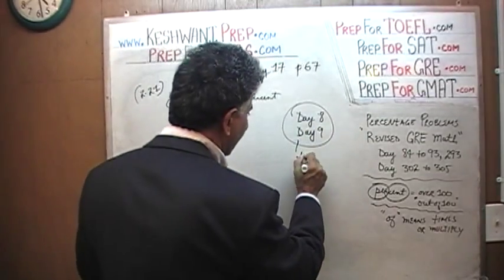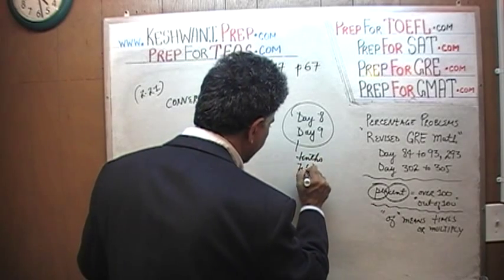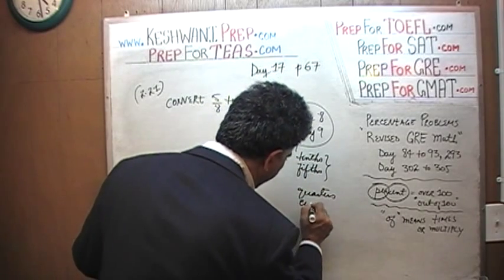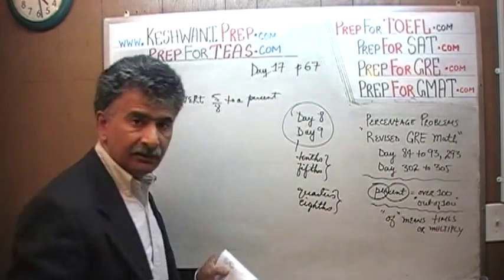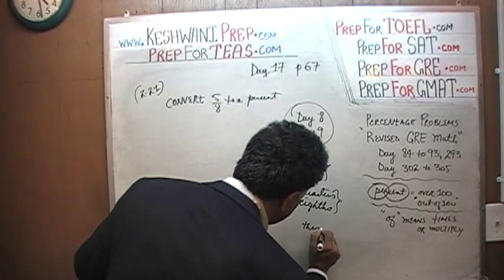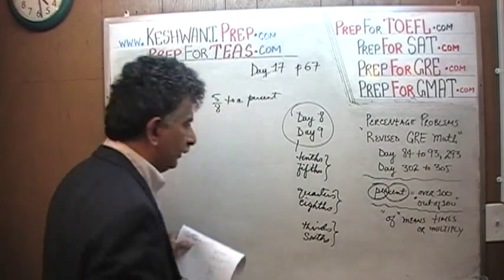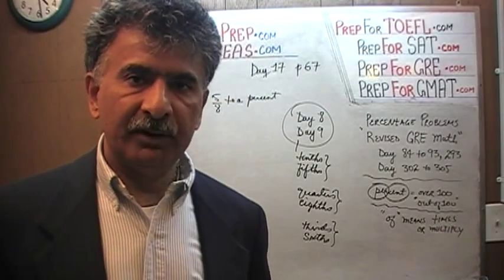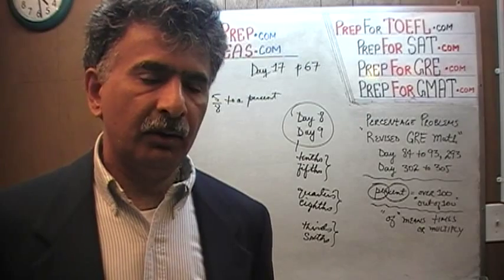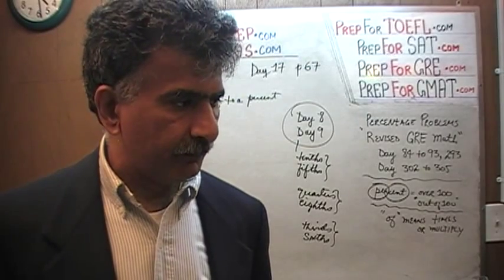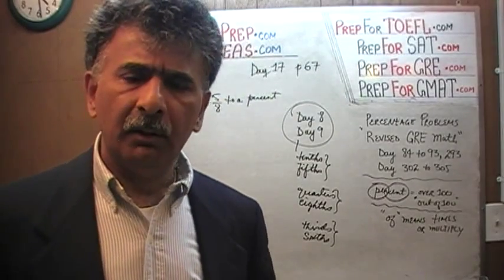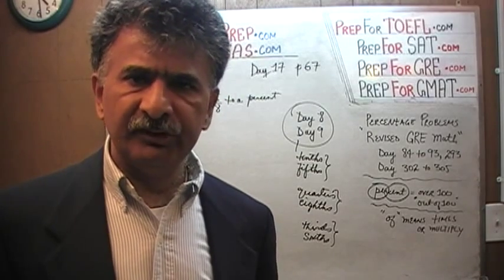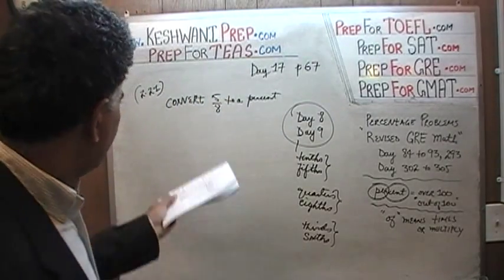on day 8 and day 9, we learned our tenths, we learned our fifths, we learned our quarters, we learned our eighths, we learned the thirds, fifths, and sixths. You must know these fundamental facts by heart. You should have it on your fingertips, I believe. You must know these by heart — the quarters, the tenths, the eighths, the sixths, the thirds. These are very basic, very elementary things.